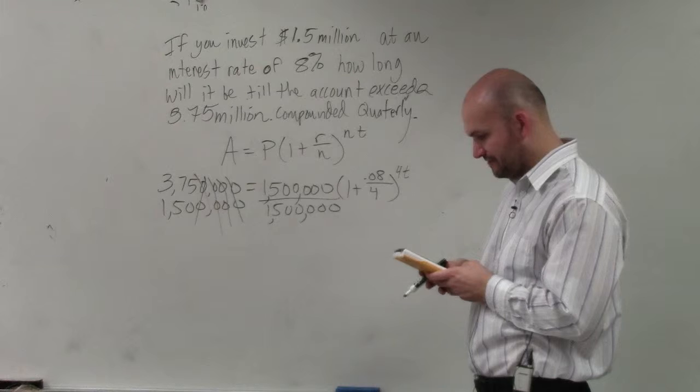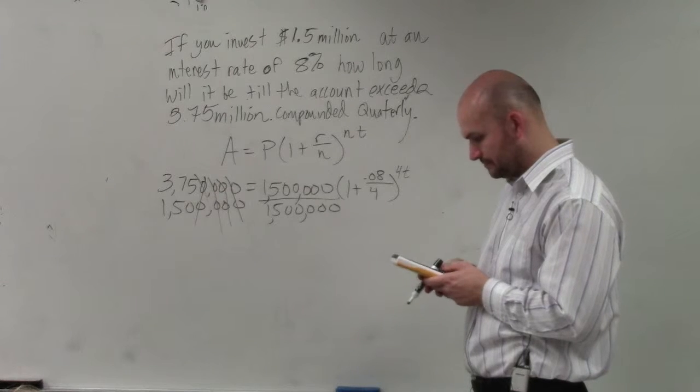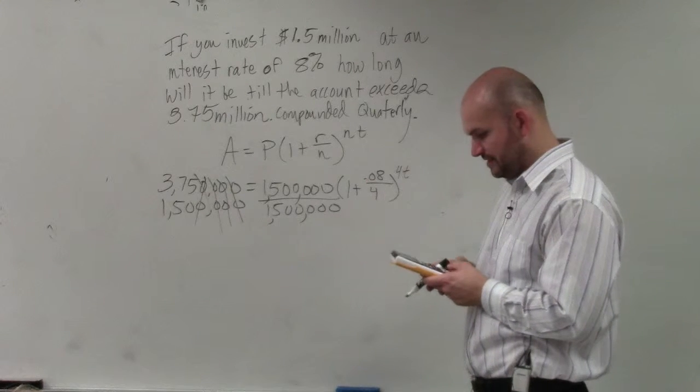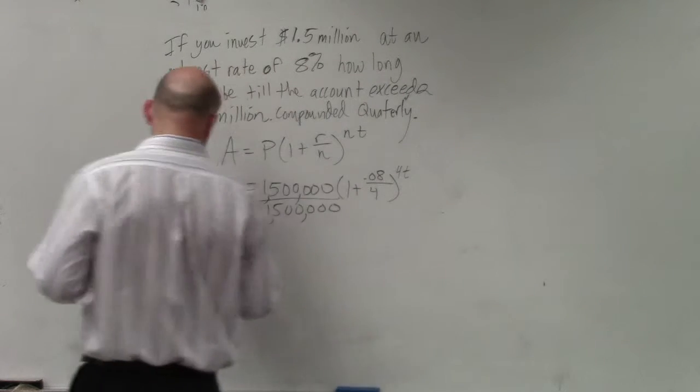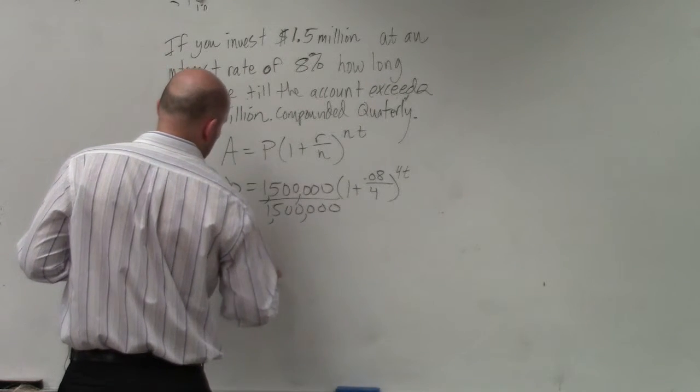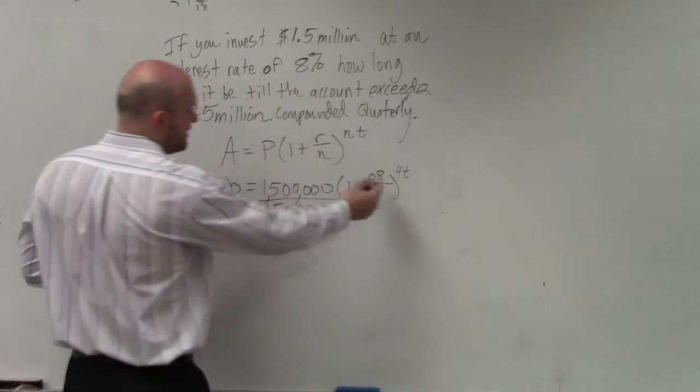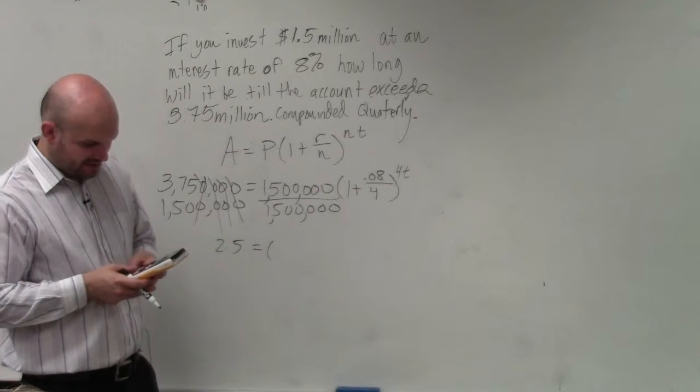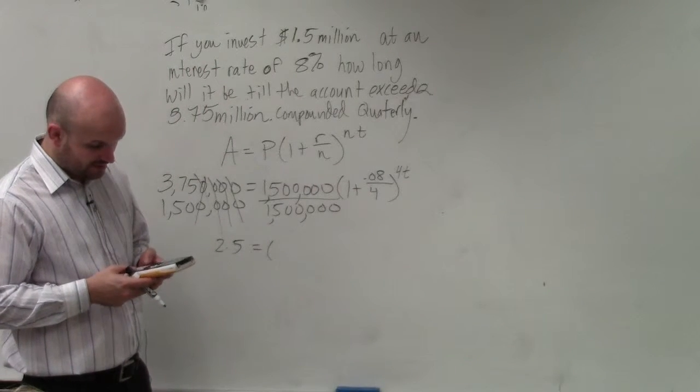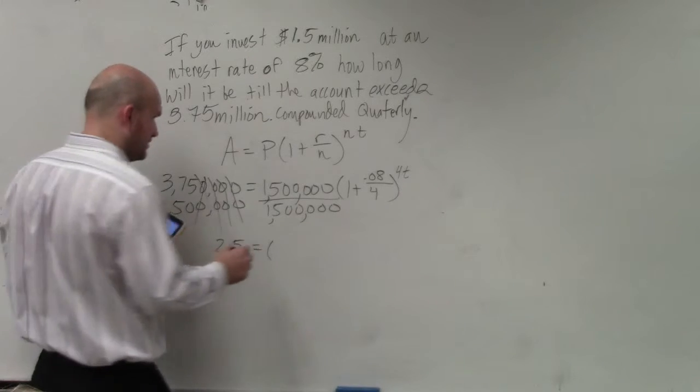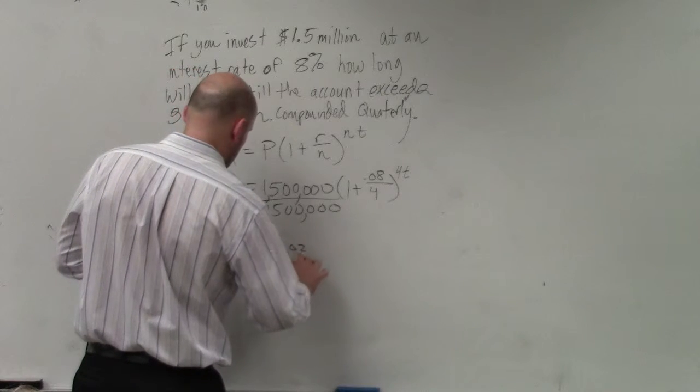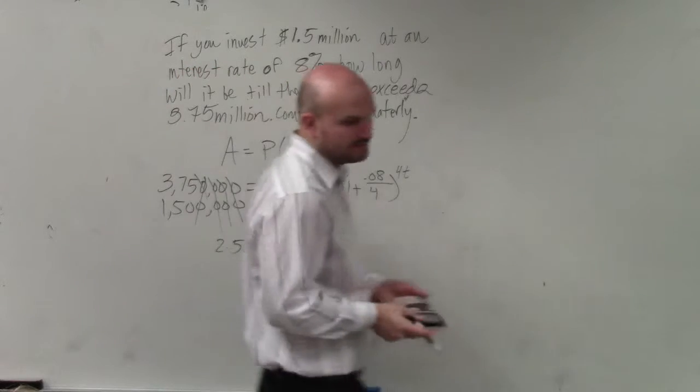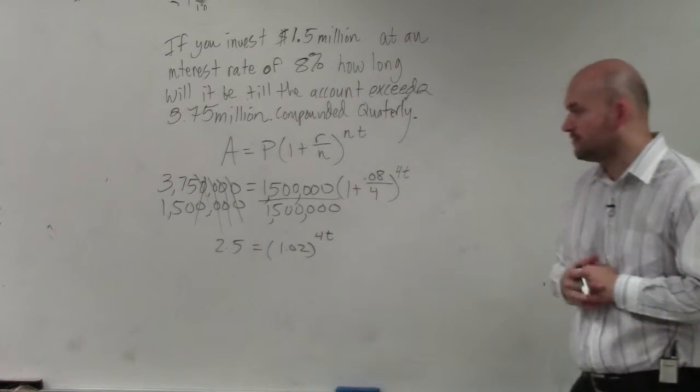So we have 3.75 divided by 1.5. That gives me 2.5. And then I'm going to add these up. So 0.08 divided by 4 plus 1, 1.02. Does everybody see what I did so far?